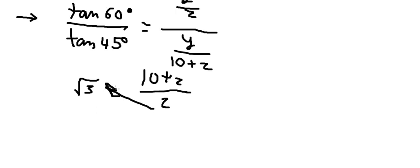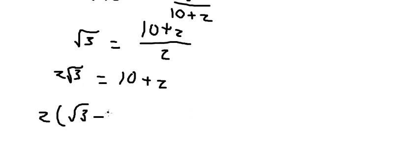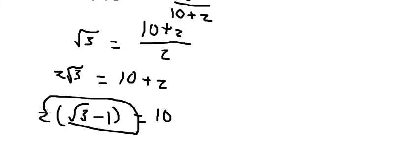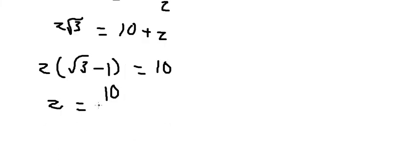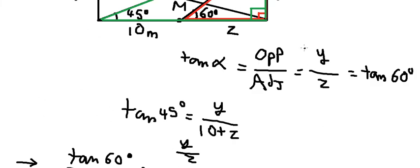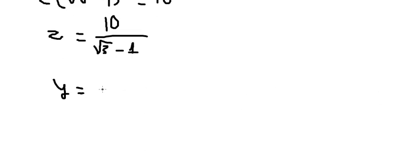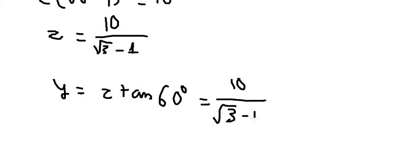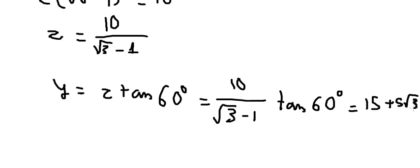I will move this term to the left, then put Z over here and divide both sides by this expression. After we find Z, we can find the value of Y. And we get 15 plus 5 times the square root of 3 meters.